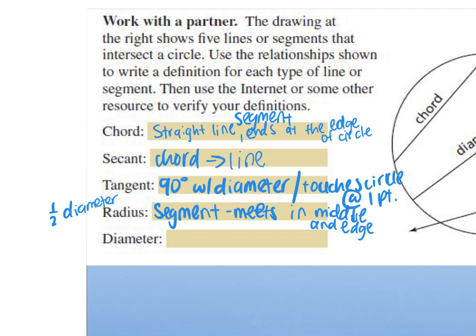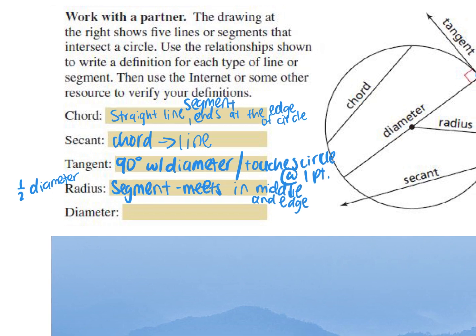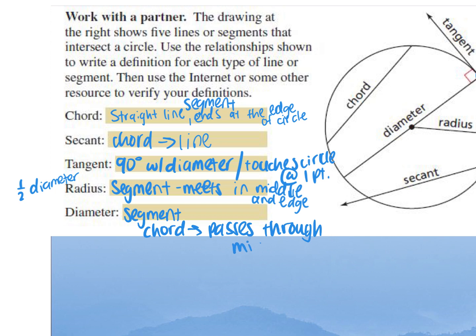How would you describe a diameter? It cuts the circle in half, and it is a segment. The diameter is a chord — it's a segment that goes from one edge of the circle to the other, but it must pass through the center of the circle. It absolutely does cut the circle in half. Diameters will always cut your circle directly in half.